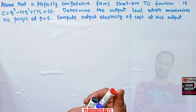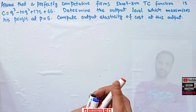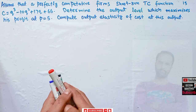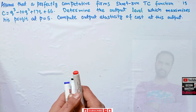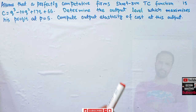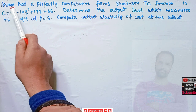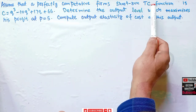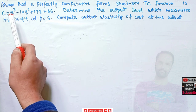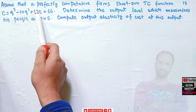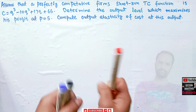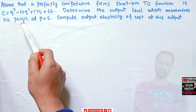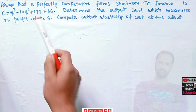In this video we will try to solve a problem on how to find the output elasticity of cost from a given perfectly competitive firm with short run cost function and the price. Assume that a perfectly competitive firm with short run total cost function is given by C = Q³ - 10Q² + 17Q + 66. Determine the output level which maximizes profit at P = 5.